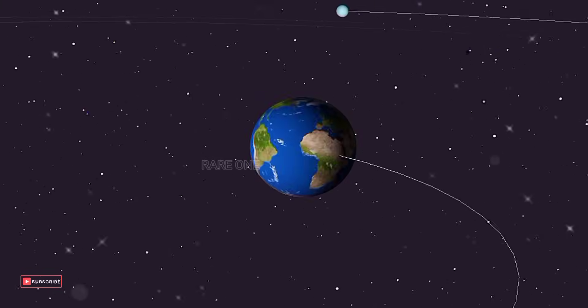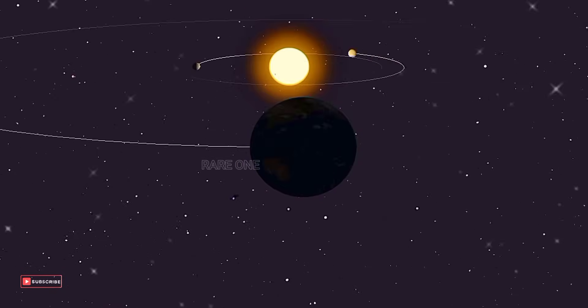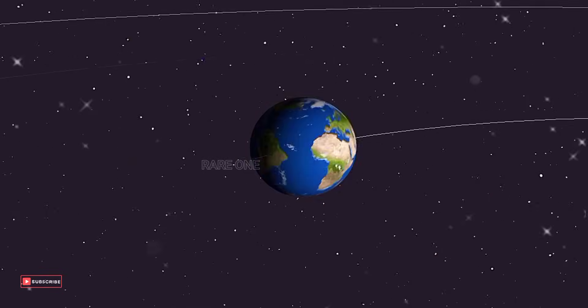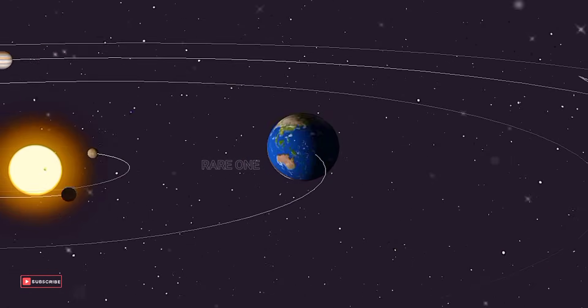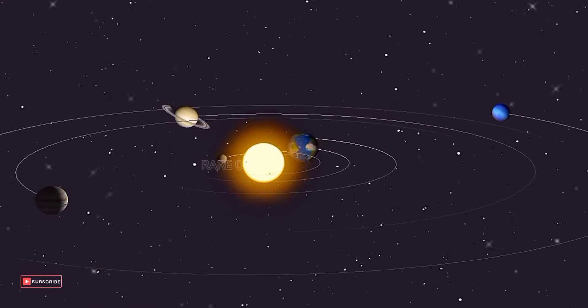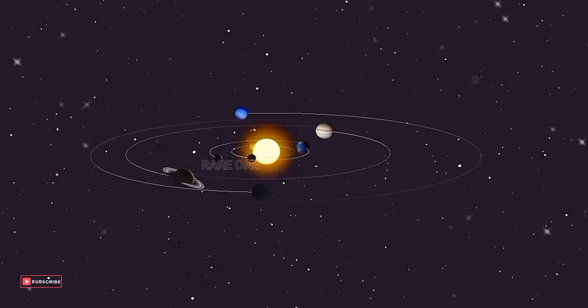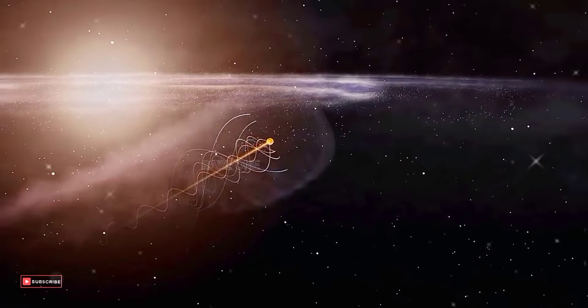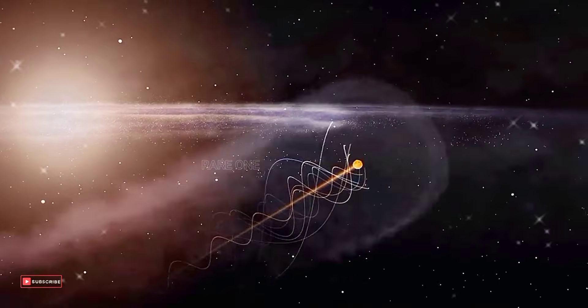Just like how the Moon orbits Earth and Earth orbits the Sun, our Sun is on its own grand journey, circling around the supermassive black hole at the center of the Milky Way. Imagine the entire galaxy in a constant dance around this black hole heart.